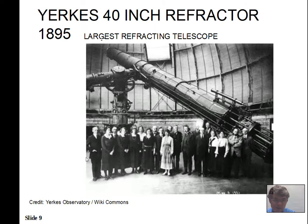A telescope built in 1895 at Yerkes in southern Wisconsin had a 40-inch diameter lens gathering the light, with the light brought down to an eyepiece. A photographic plate could be placed there as well. A photo shows Einstein with this telescope, likely from the late 1920s or early 1930s. The people in the photo give a sense of scale — the telescope is quite large and moving it around is a bit unwieldy, requiring a ladder if observing something low on the horizon.